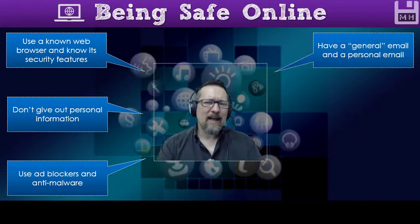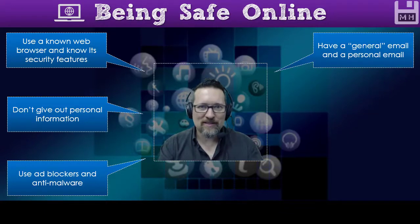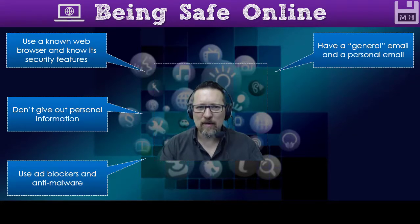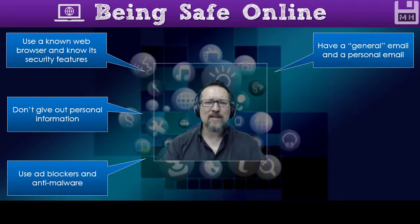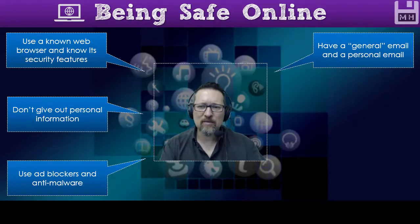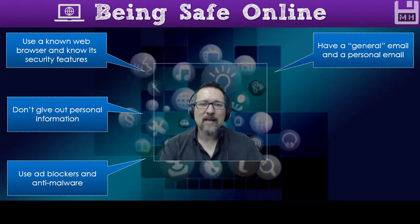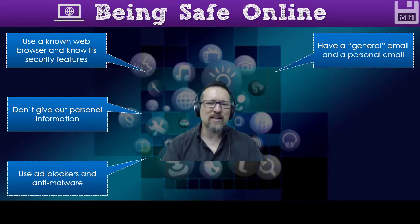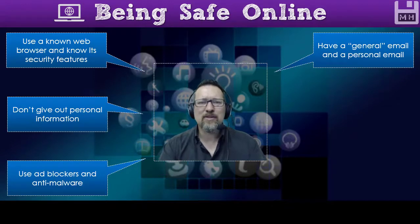Have two passwords and two email addresses. Have a general email that you don't really use and have a personal email. Your personal email is for people that you know — friends and family — so you can communicate with people you want to communicate with and not be bombarded by spam. The general email is for signing up on sites, temporary access, or where they require an email address and you don't really need to be involved with the site — stock images and stuff like that.